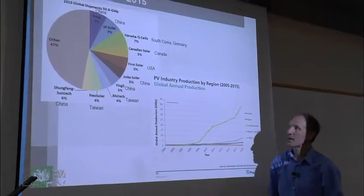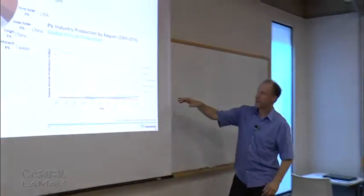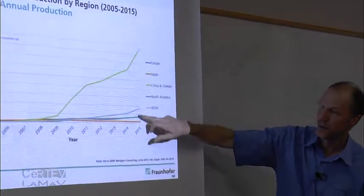In 2015, the biggest producers are from China — Trina, Jaya Solar, Jinko Solar, Jingli Solar — and from Taiwan. Only First Solar and Canadian Solar remain in the top ten from other regions. China and Taiwan together make about 45 gigawatt-peak from the global 100, so about 50% of all PV modules are produced in China and Taiwan.